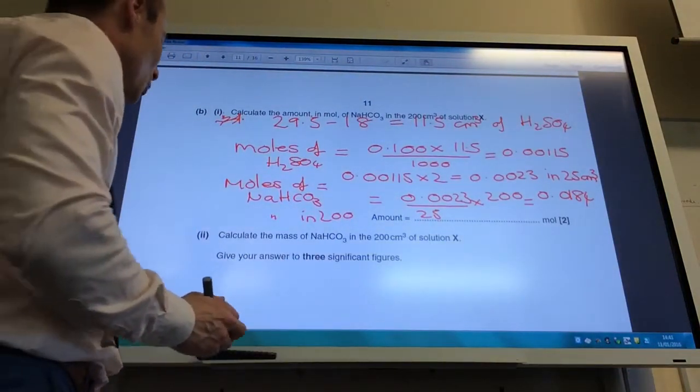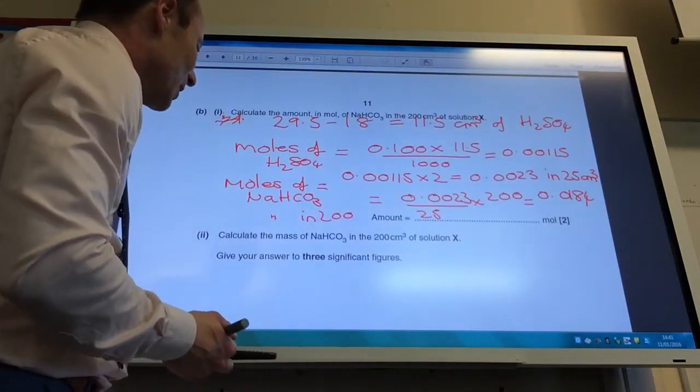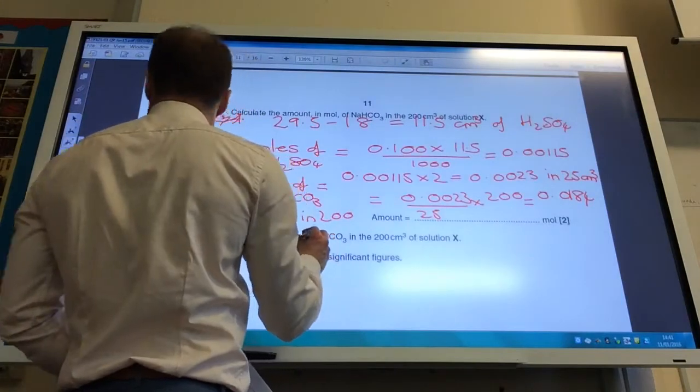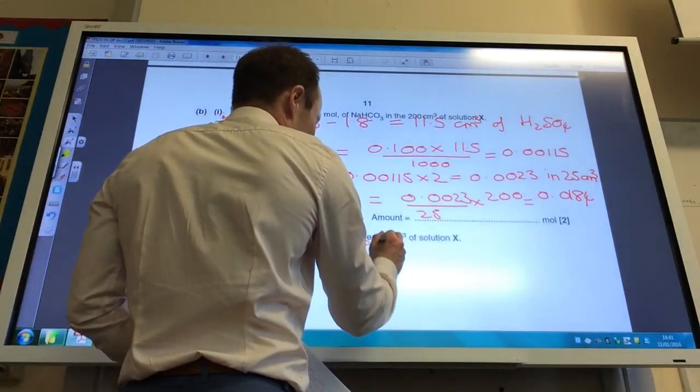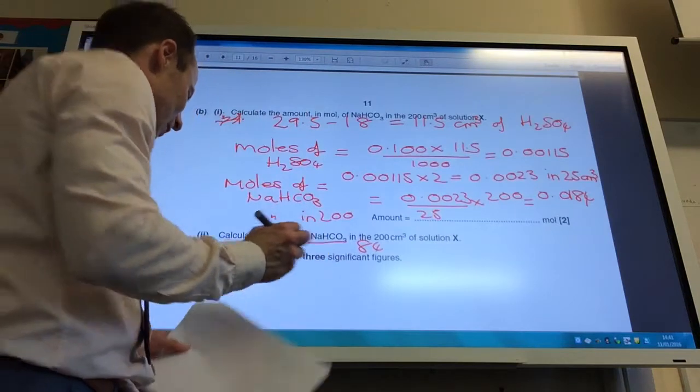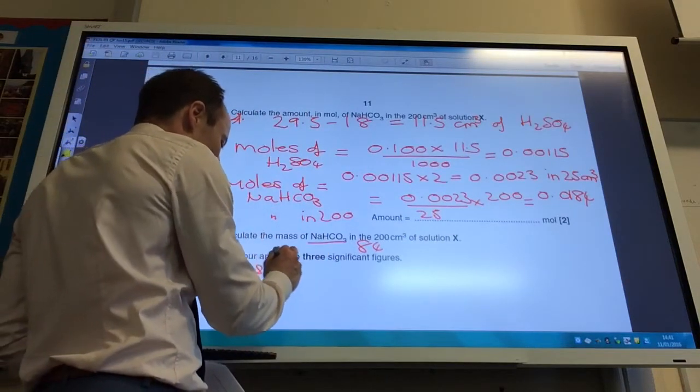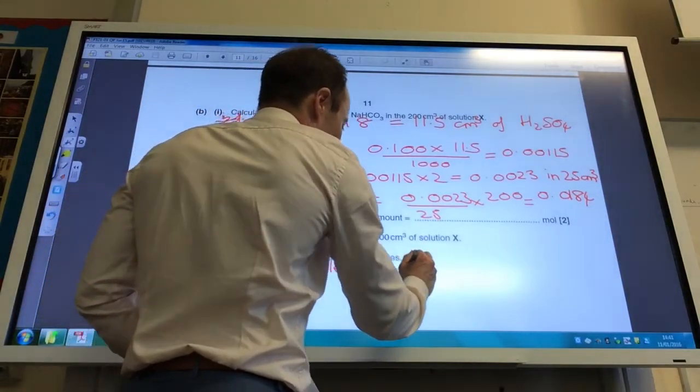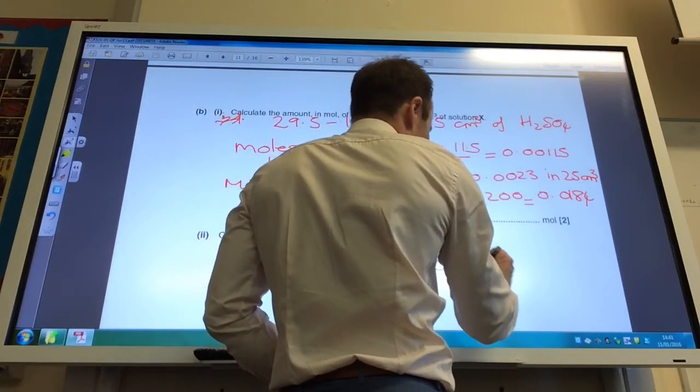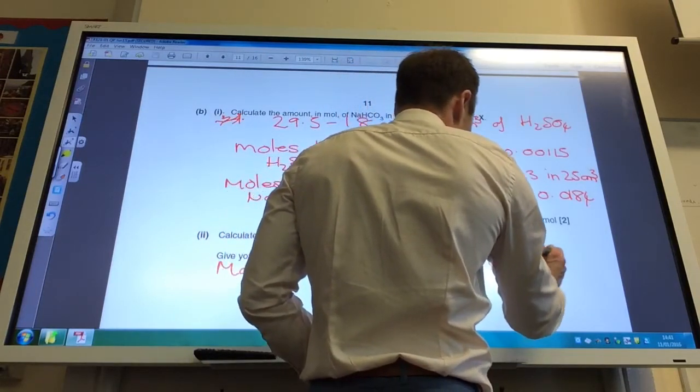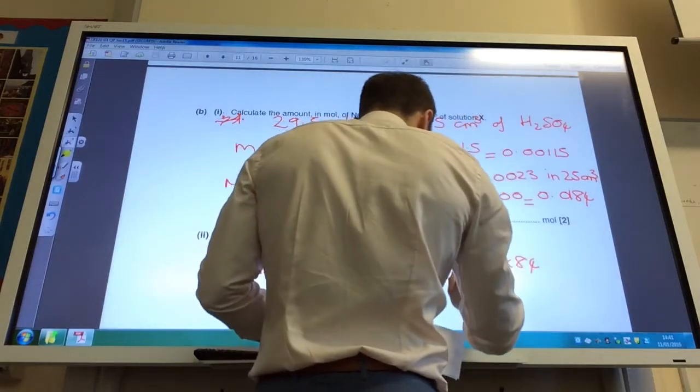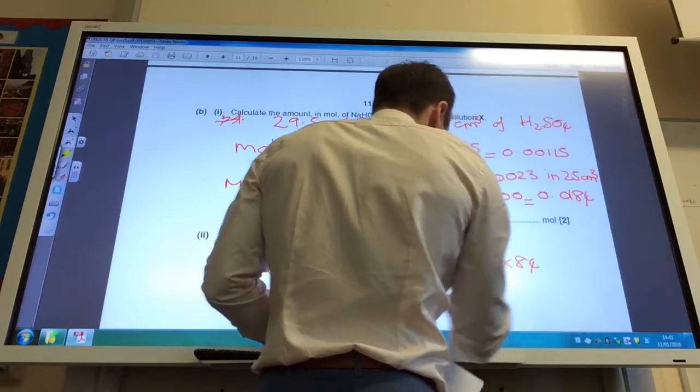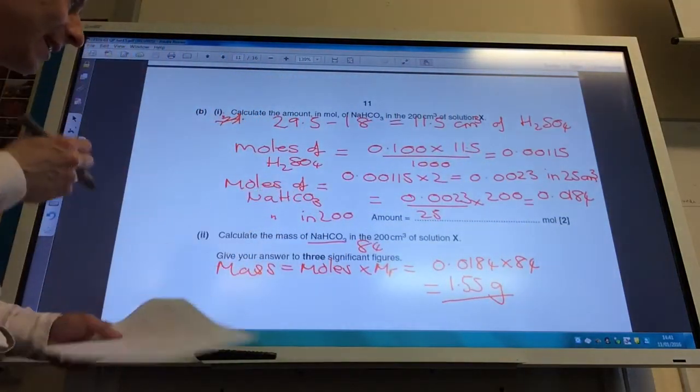Okay, and now for the easier bit. Now counting the mass of sodium hydrogen carbonate in 200 centimeters cubed. Well, the molar mass of that sodium hydrogen carbonate is 84. If you add it up, mass we know is equal to moles times molar mass, which is going to be 0.0184 times by 84, which gives me 1.55 grams. Notice they want it to three significant figures.